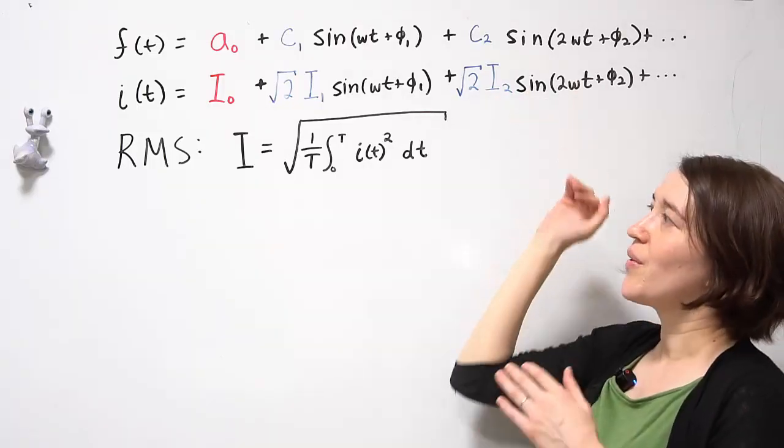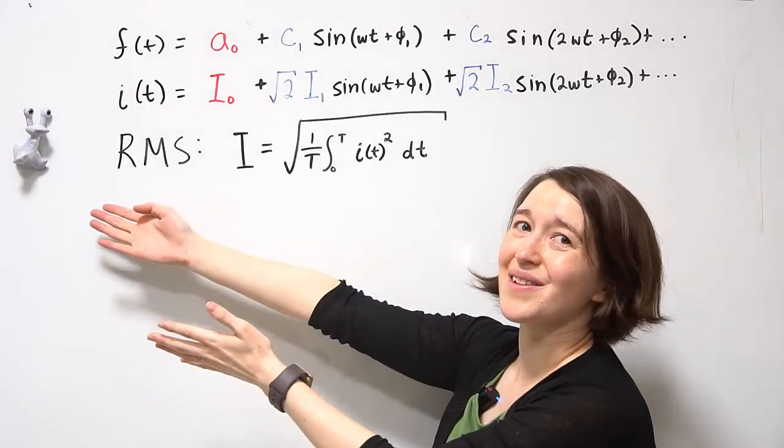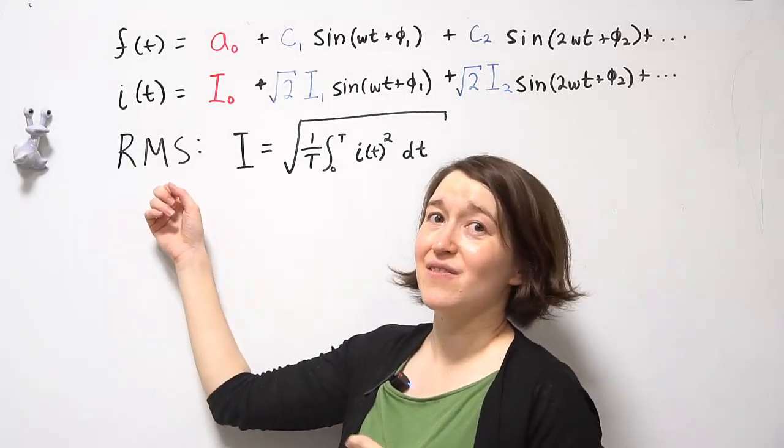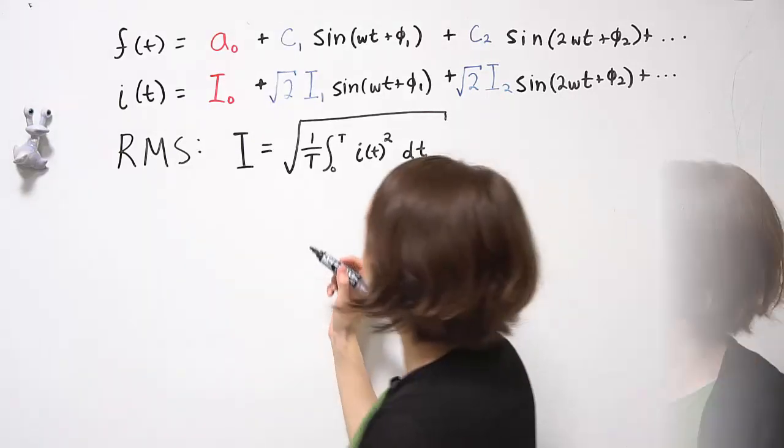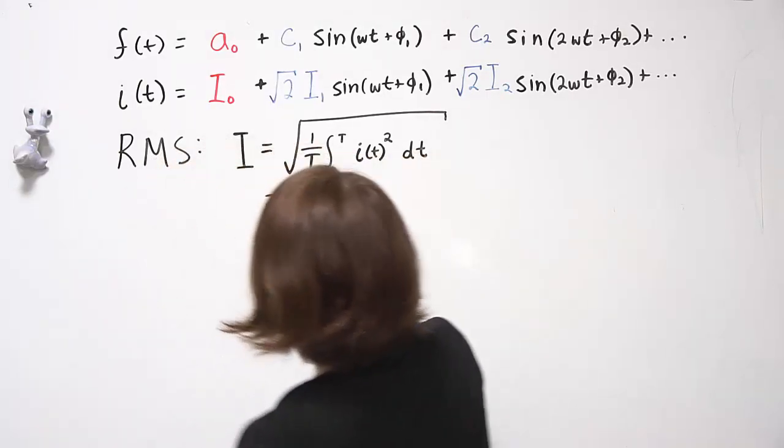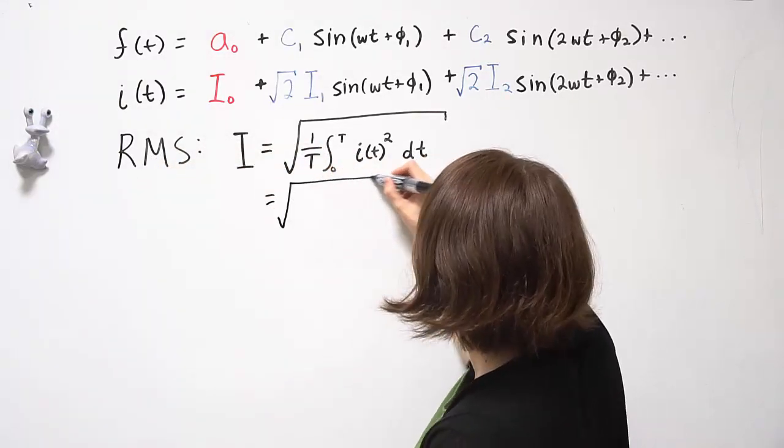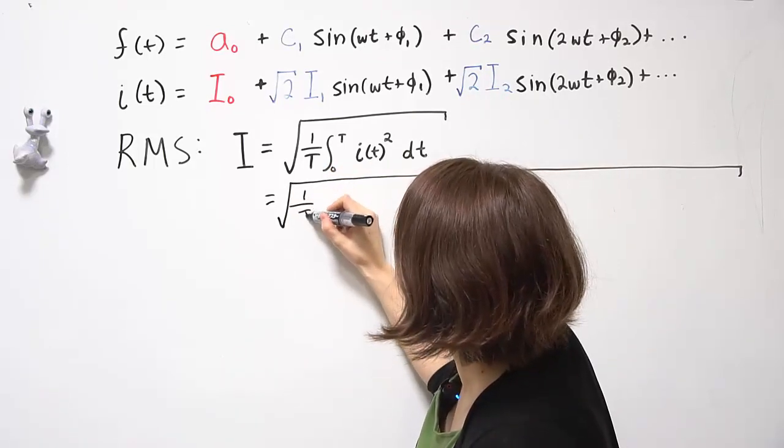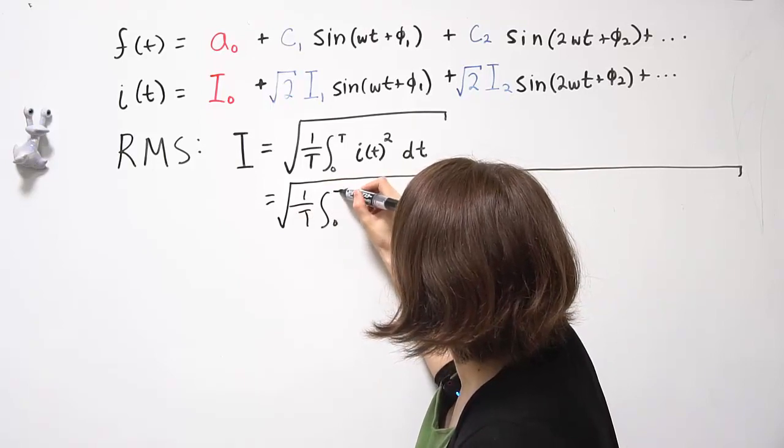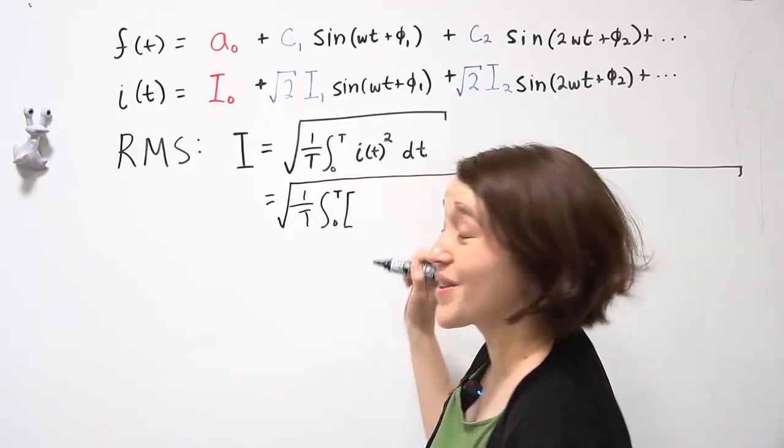We're now going to look at what we want us to solve for, the RMS value for the current. So we start with the basics, just following the equation. 1 over T, integral from 0 to T.